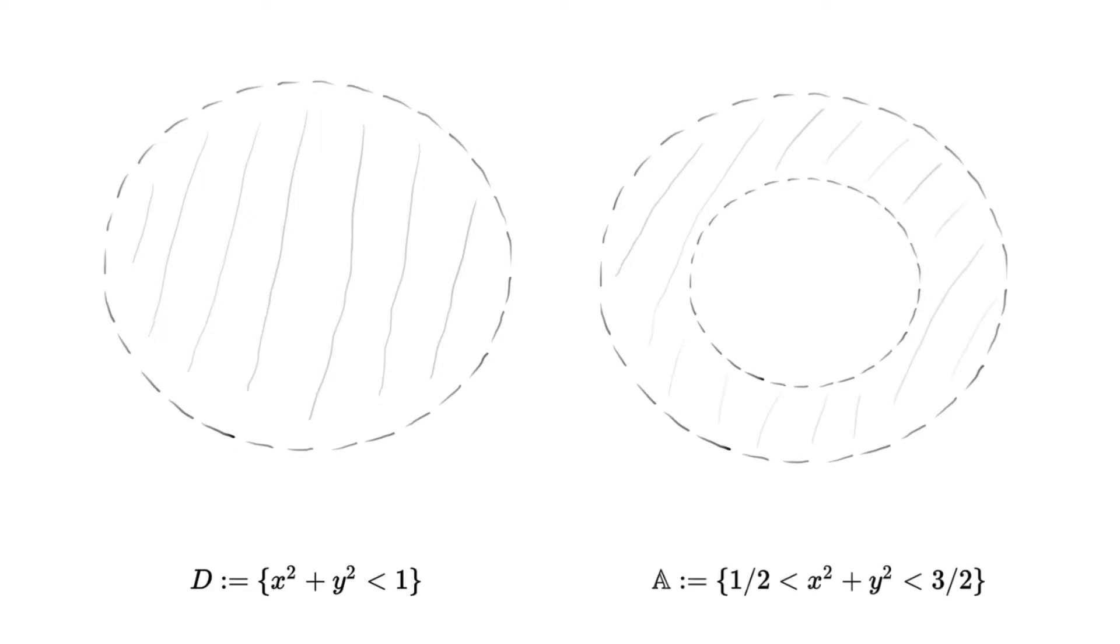Consider the following subspaces of R2. The first one is the open disk D, that is, the collection of points that have radius at most 1. The second one is the annulus A. This is made out of the points whose radius squared is in between 1 half and 3 halves.